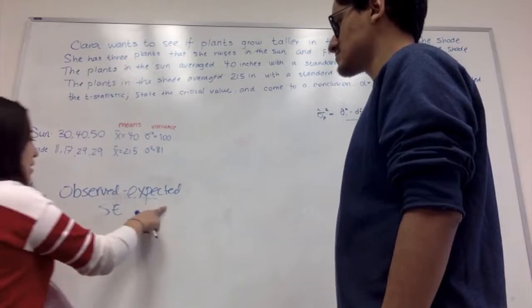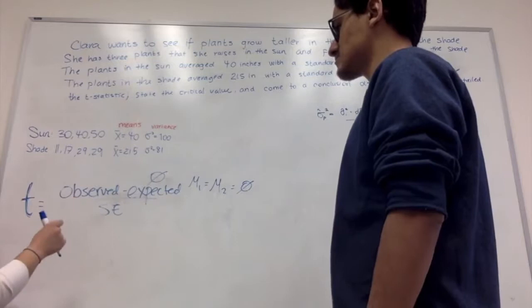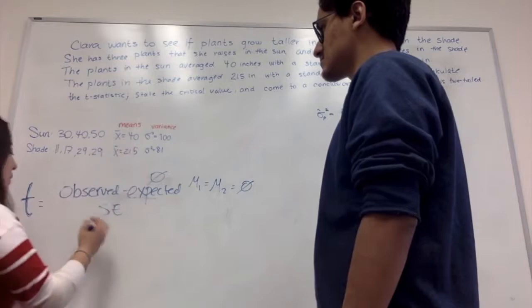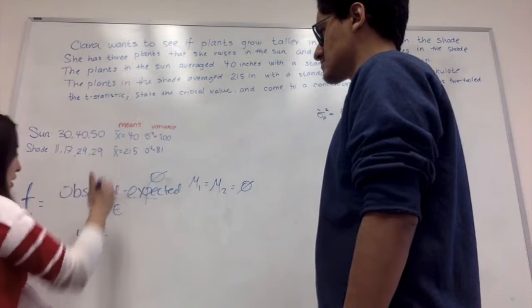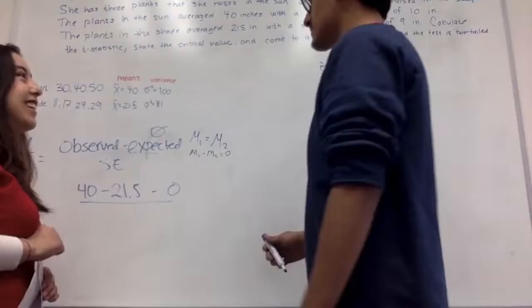So we're going to do observed minus expected. So this is 0. And then the observed is going to be our means of both of these. So 30 plus 40 plus 50 divided by 3 is 40. So we're going to do 40 minus the means of these, which is 21.5 and then minus 0. So now we have to find the standard error. Okay. So now that we need to find standard error, what do we do? Oh, I think I remember. We have to use the standard error formula.